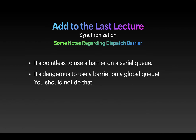Some notes regarding the dispatch barrier: First, it's pointless to use a barrier on a serial queue because everything is already serial — the barrier has no effect. Second, it's dangerous to use a barrier on the global queue. The global queue is shared by the entire system; other apps and system resources may use it for critical tasks. You don't want to block it, so never use a barrier on the global queue.